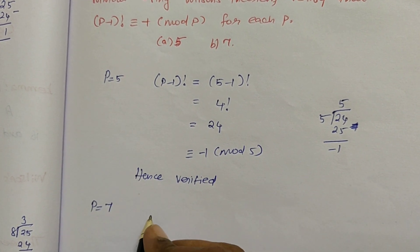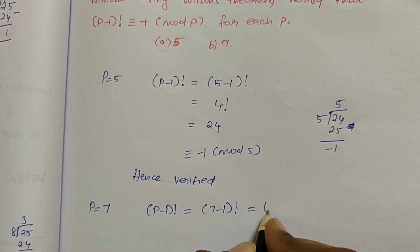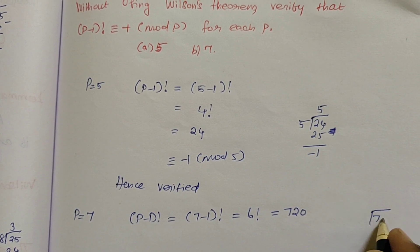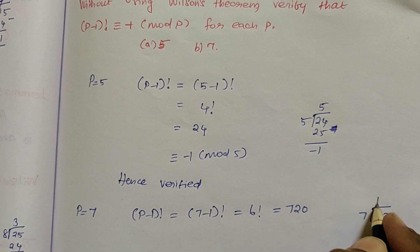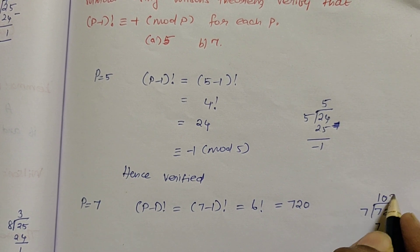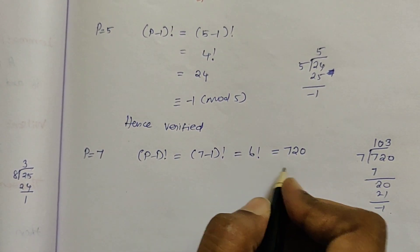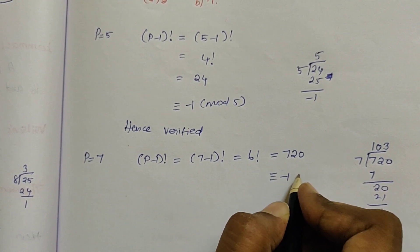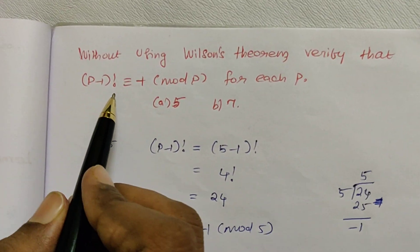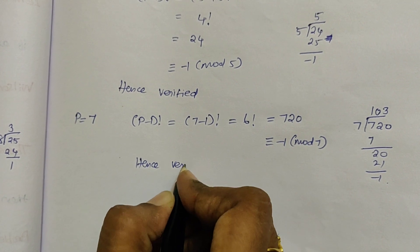Similarly, we can verify for p equal to 7. This (p-1)! equals 7 minus 1 factorial, which is 6 factorial. We know that 6 factorial equals 720. When you divide 720 by 7, we get remainder -1. So 720 ≡ -1 mod 7, which also satisfies the congruence relation (p-1)! ≡ -1 mod p. For p equal to 7 also, we verify this.